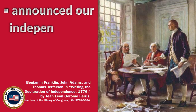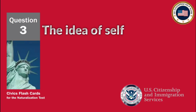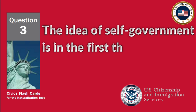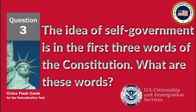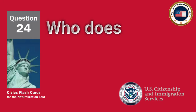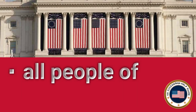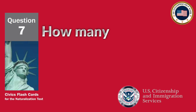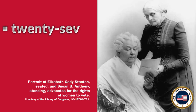What did the Declaration of Independence do? Announced our independence from Great Britain. The idea of self-government is in the first three words of the Constitution. What are these words? We the people. Who does a U.S. Senator represent? All people of the state. How many amendments does the Constitution have? 27.